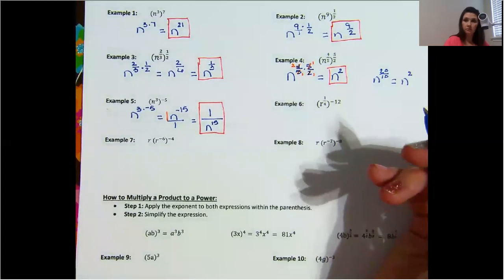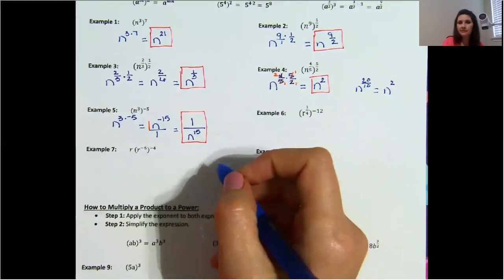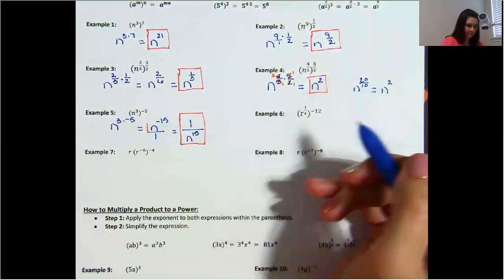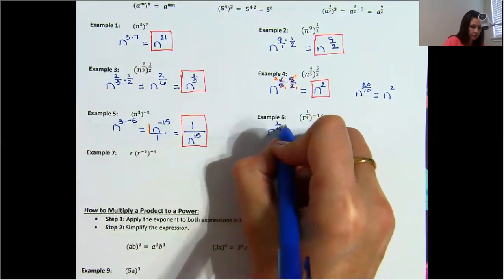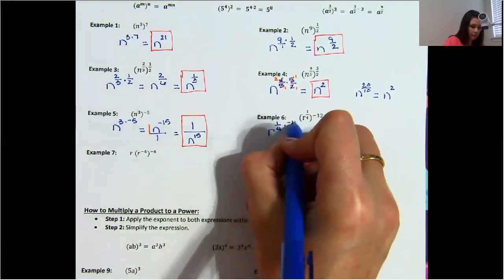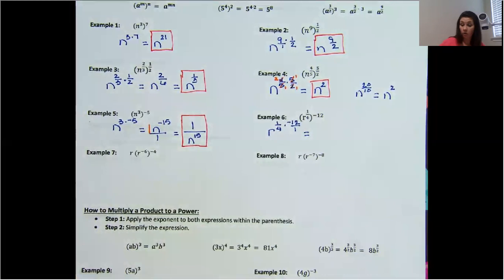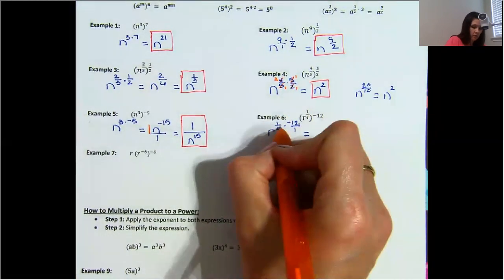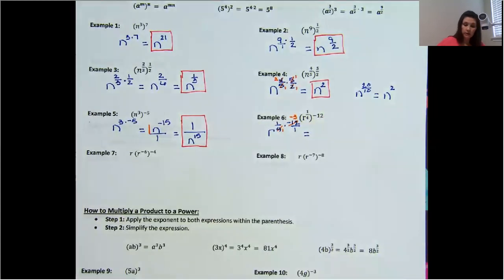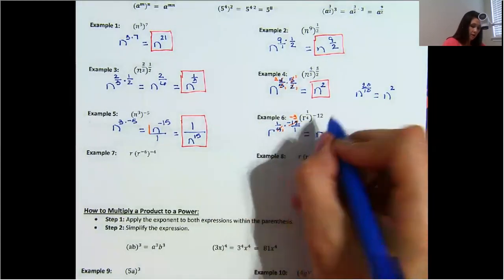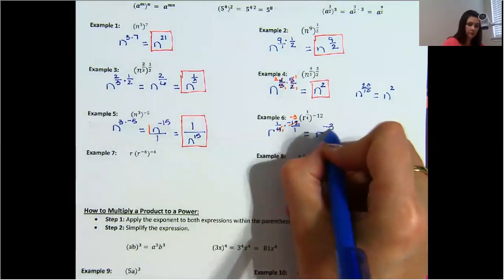Example 6. We have r to the power of 1/4 times negative 12. Remember we could put a 1 under that, and then we can cross simplify: 4 divided by 4 is 1, negative 12 divided by 4 is negative 3. So we end up with r to the power of negative 3 over 1, which is just r to the power of negative 3. We're not done — we have to move that down, so the answer is 1 over r cubed.